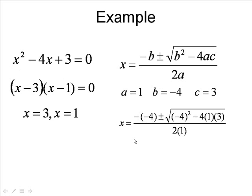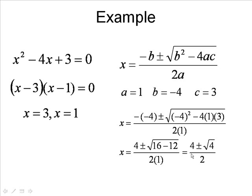So now when we solve this, negative negative four becomes a positive four, as shown here. Plus or minus, four squared is 16, so negative four times negative four is 16. Four times one is four. Four times three is 12. There's a minus sign, so there's minus 12. That leaves four plus or minus square root of four divided by two. And the square root of four is two.